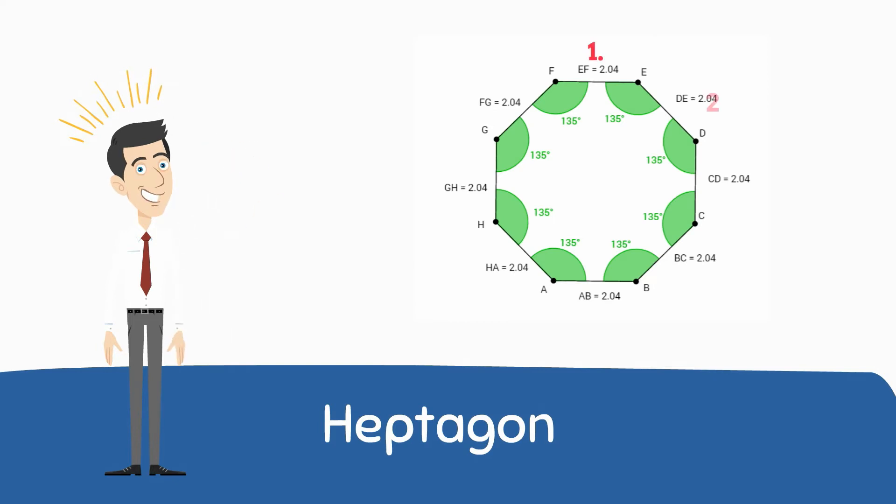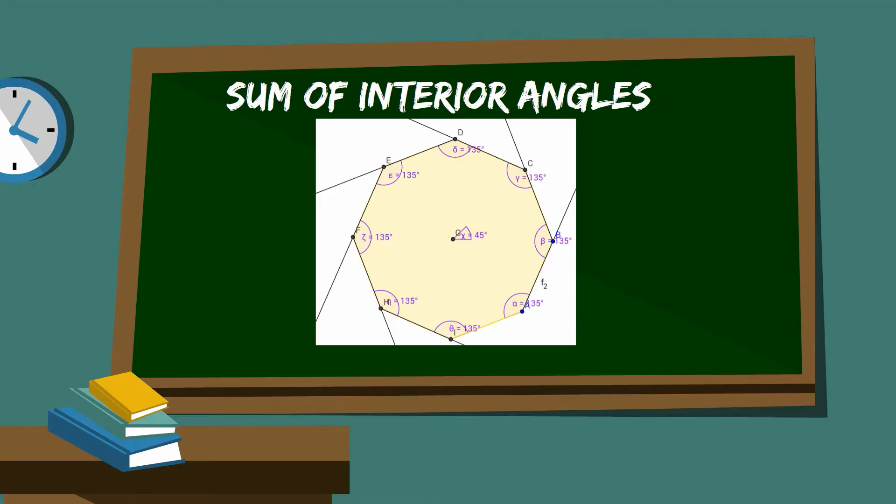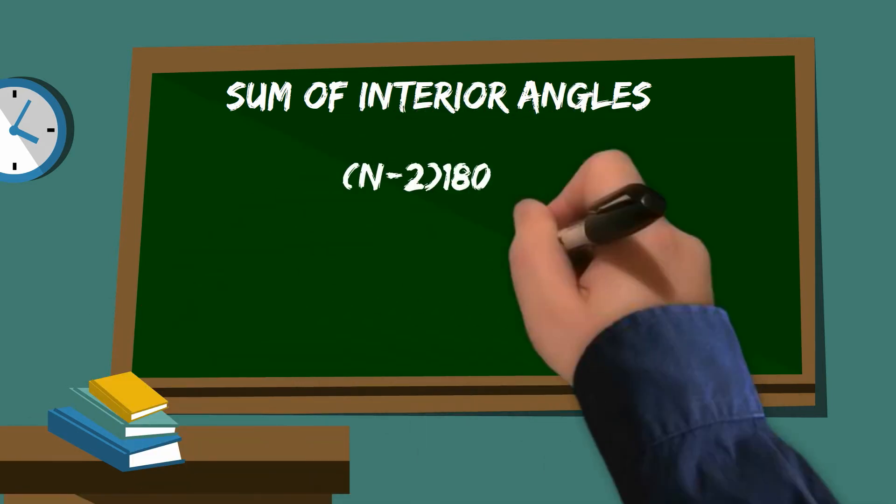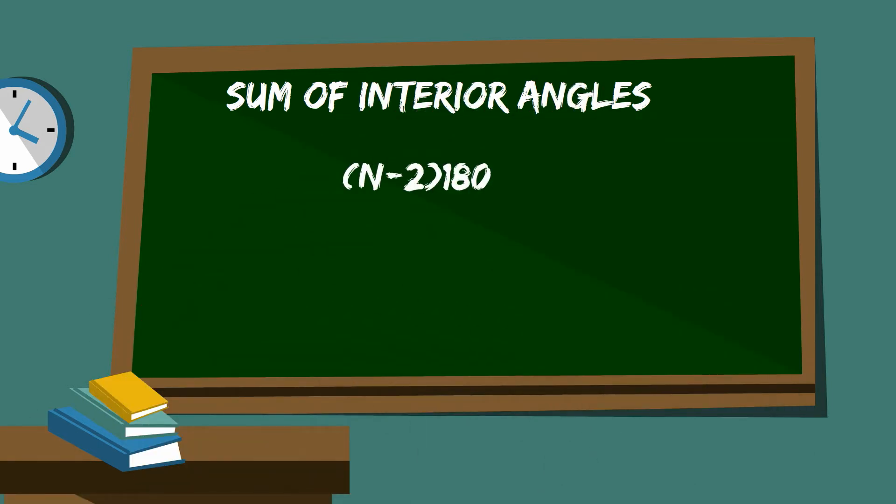A regular octagon has 8 equal sides and 8 equal angles. The general formula for the sum of all of the interior angles of a polygon is take (n-2) times 180 and n is the number of sides.